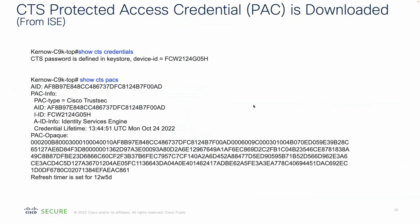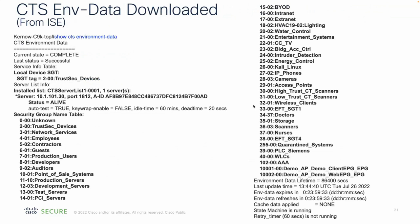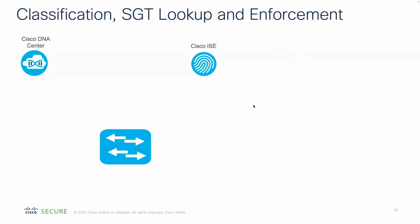Once configured, the network access device connects to ISE and downloads the protected access credential, and also downloads what we call the environment data. This has: an SGT for the device itself, a CTS server list identifying the ISE persona this device will download policy from, the whole list of SGTs available, and some timers. For a single-platform scenario: the first step is classifying endpoints into a group. Because we're on a single platform, we may have two endpoints on this one platform and then enforce between them. The policy can be automated from Cisco DNA Center or configured directly on ISE.